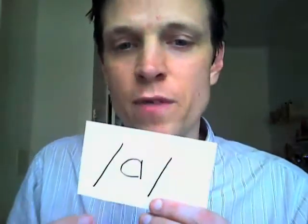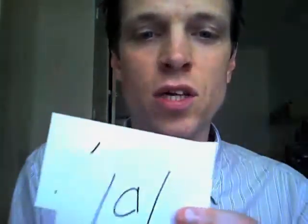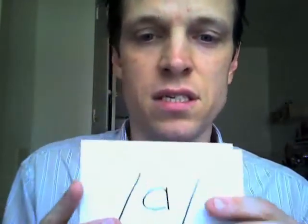And the two words on the paper are 'box' and 'father'. Now when you write this symbol, be careful — make sure it looks like this. If you write it like this, that's wrong. Make sure it looks correct, not the wrong version.